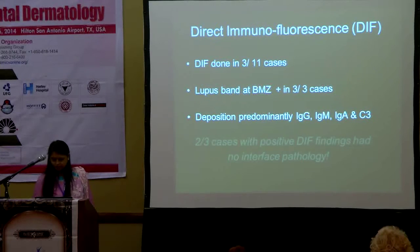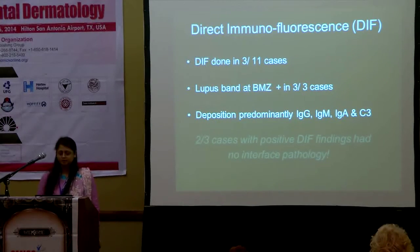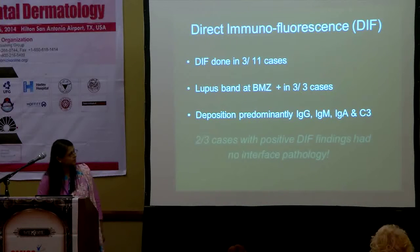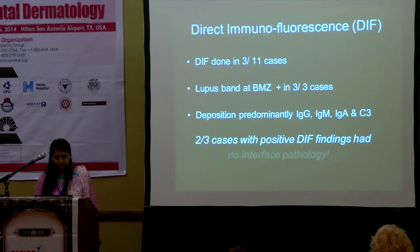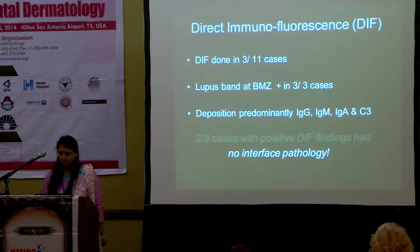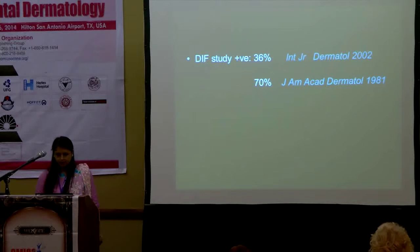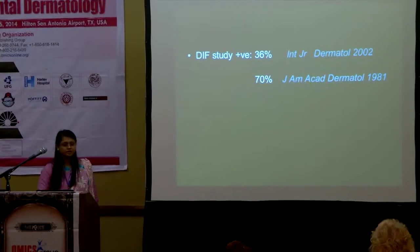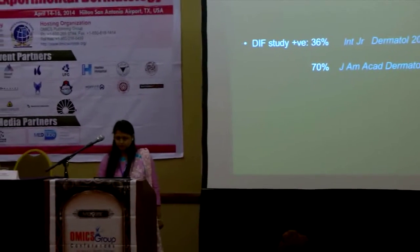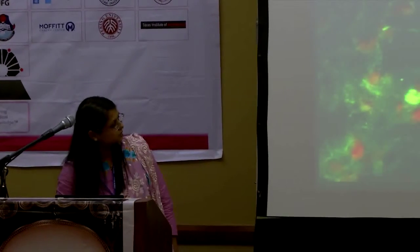Direct immunofluorescence (DIF), an important diagnostic tool, was performed in 3 out of 11 patients. The lupus band was positive in all 3 patients, with predominant deposition of IgG, followed by IgM and C3. Notably, 2 of the 3 cases had no interface pathology on histology, making DIF an important diagnostic tool in such cases. Similar studies in the literature report a range from 36% to 70% positivity. An immunofluorescence image shows the lupus band at the dermoepidermal junction with IgM deposition.